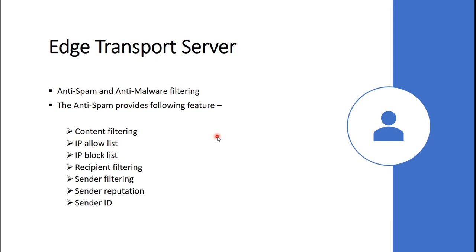The edge transport server handles all inbound and outbound internet mail flow by providing mail relay and smart host services for your Exchange organization. The agents running on the edge transport server provide an additional layer of message protection and security. These agents provide protection against spam and apply transport rules to control mail flow. You can install more than one edge transport server in the perimeter network.